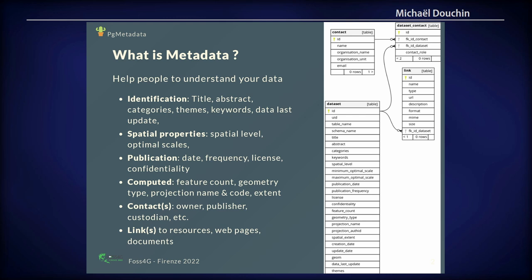So on the right you have a small representation: the dataset, contacts, and links for your data. It's a very simple model.